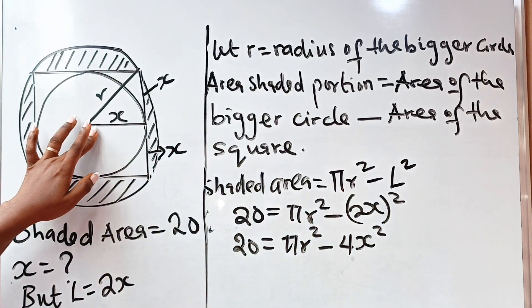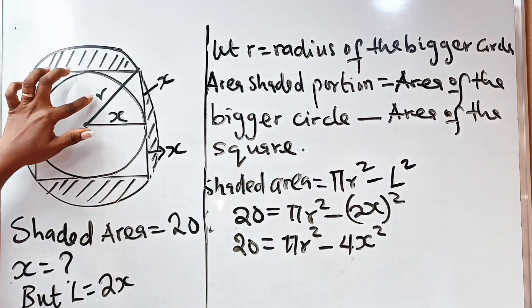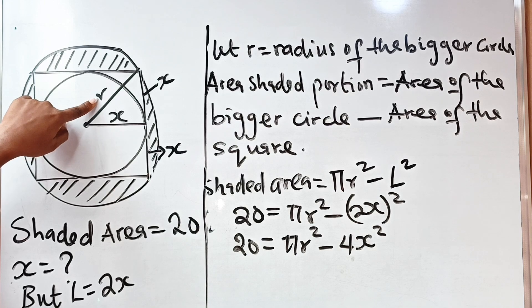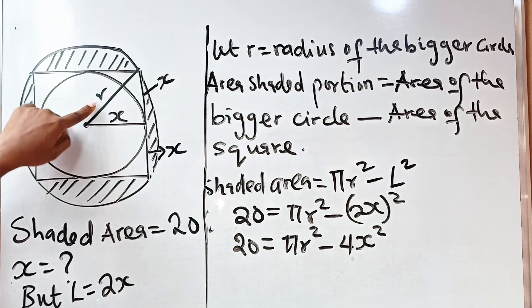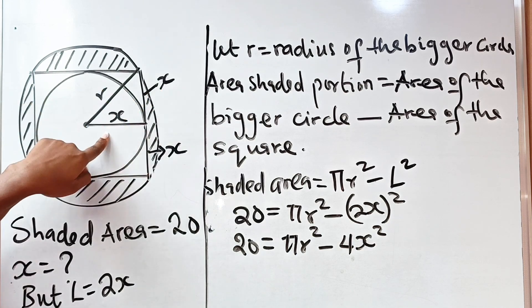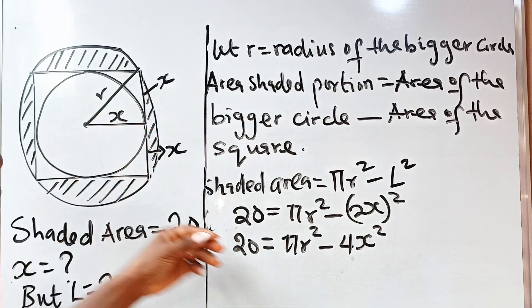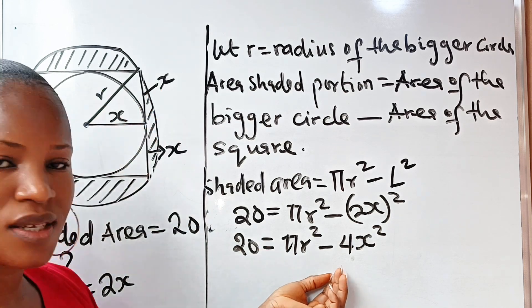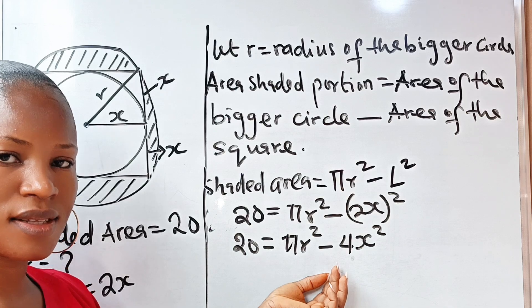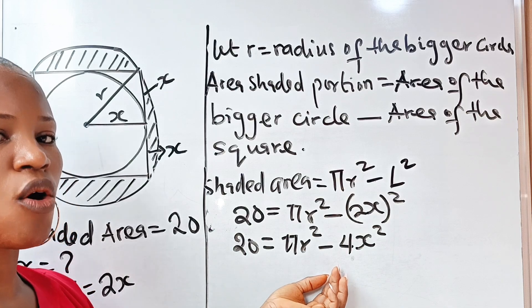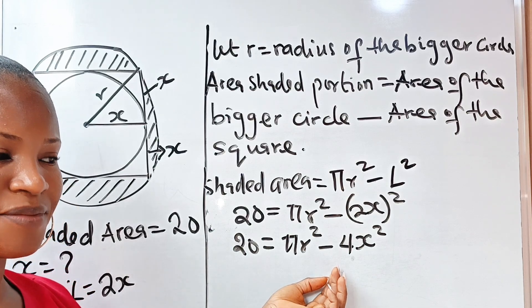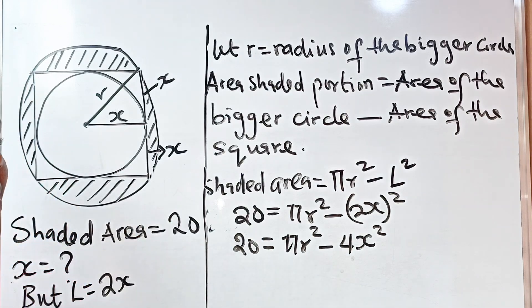So we cannot get whatever we are looking for if we can't find one of these variables. Let's go back to the diagram and get r in terms of x, so that we can substitute to get the value of x.